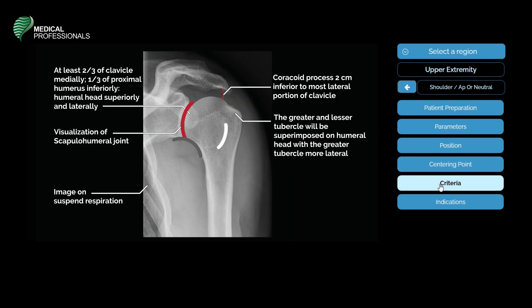Now, let us look into the evaluation criteria of the image acquired in a shoulder AP x-ray position. At least two-thirds of the clavicle should be seen. One-third of the proximal humerus inferiorly should be seen.